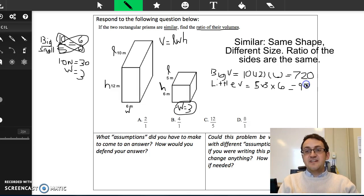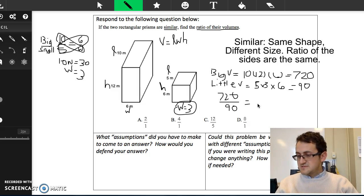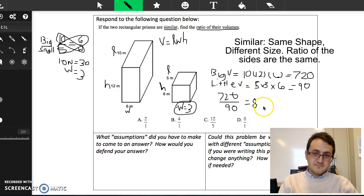And the last thing I need to do is just find the ratio. So this means that I compare big V to little v. So I'm going to do 720 divided by 90, which comes out to, if we simplify, it just comes out to 8 to 1, which corresponds to answer choice D.